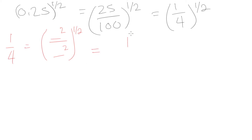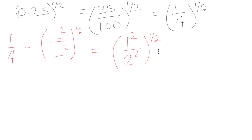We know 1 squared is still 1, and 4 is 2 squared. So we can write 1 quarter as 1 squared over 2 squared. Raising that to the power of 1 half, our exponent laws give us 1 squared to the power of 1 half divided by 2 squared to the power of 1 half. Multiplying the exponents, we get 1 to the power of 2 over 2 divided by 2 to the power of 2 over 2, which simplifies to 1 over 2 — so the answer is 1 half.